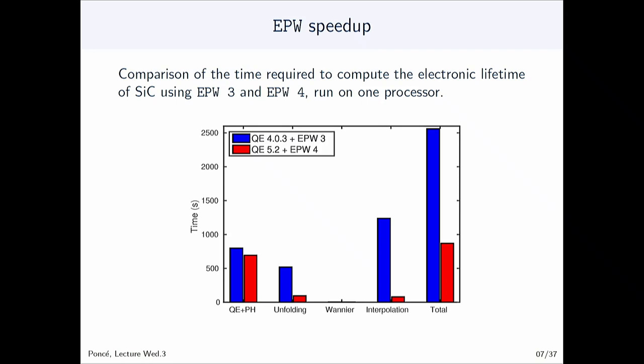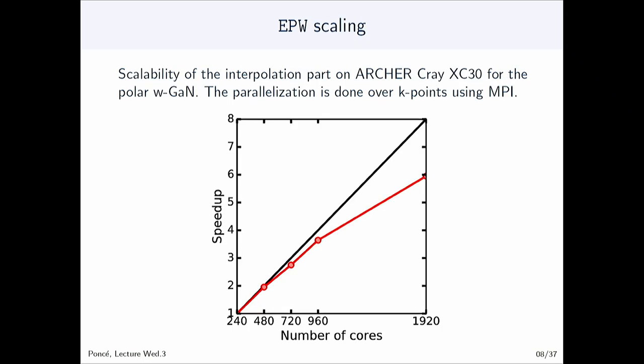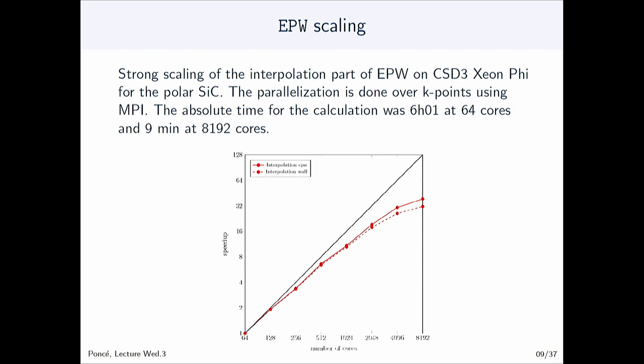There has been significant effort to speed up the code. In version 4 of EPW you can see quite a big reduction of computation time. We've also worked on MPI parallelization — using a Wurtzite gallium nitride example, the speedup is relatively decent up to 1000 or 2000 cores on the UK national Archer supercomputer. Recently, tests on new Xeon Phi architecture show decent scaling up to 8000 cores on a Cambridge cluster.